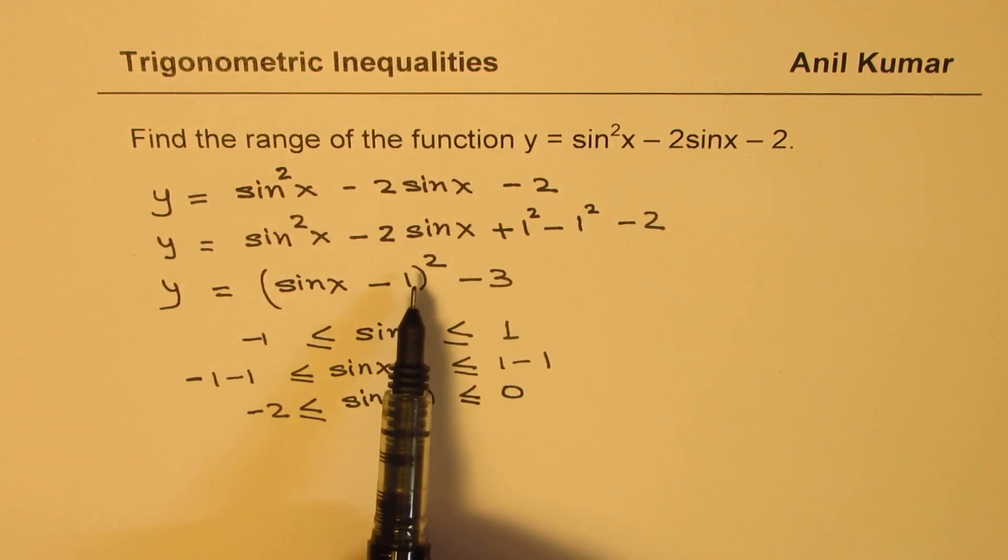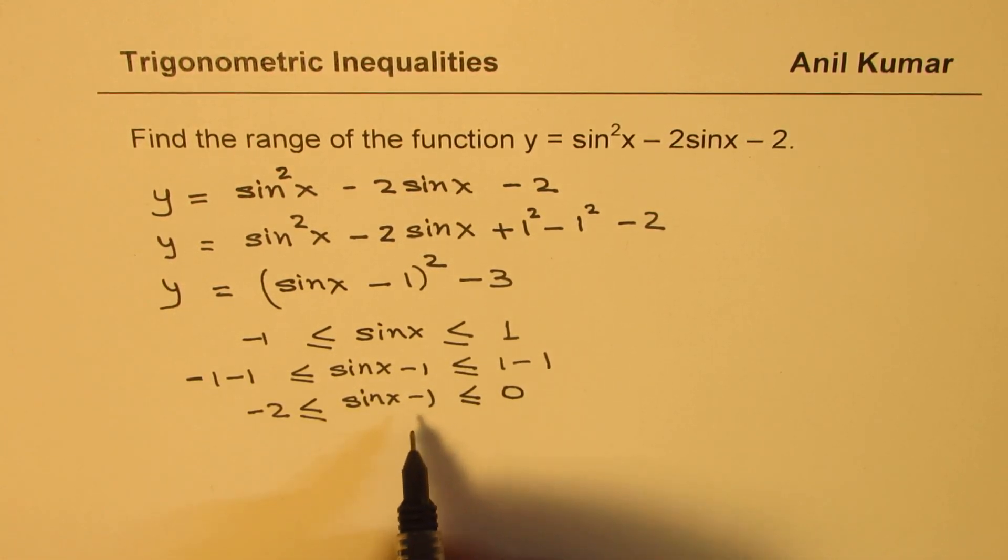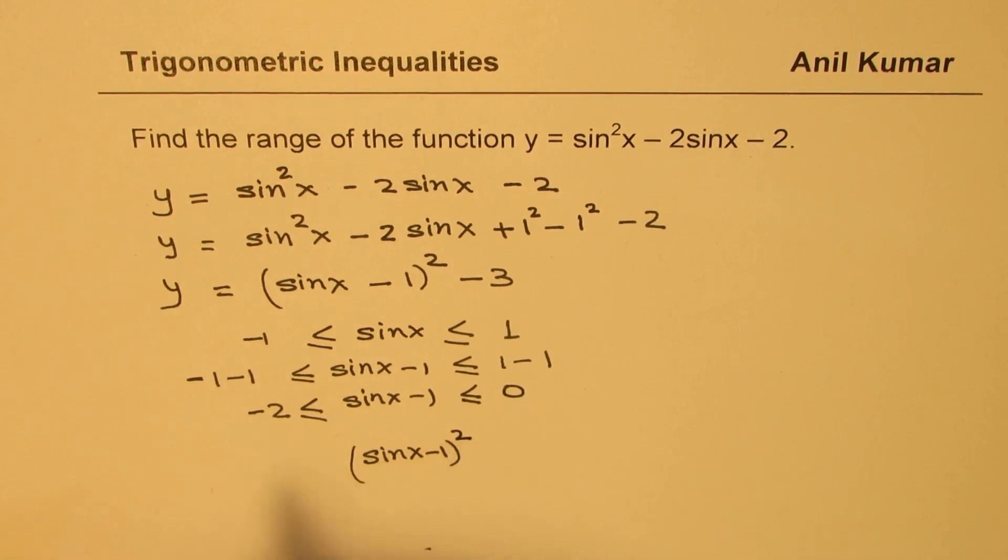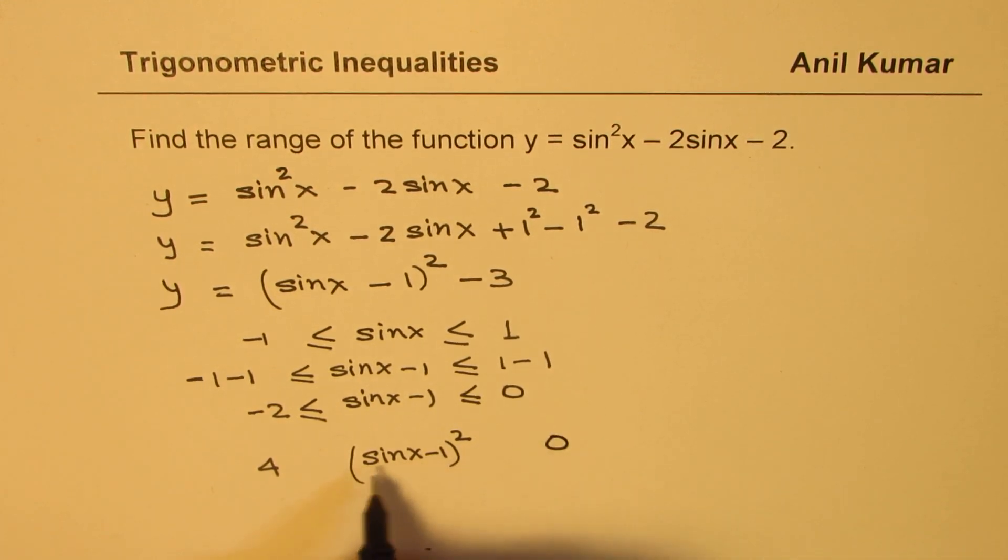So we need to now square. So if I square all these terms they will become positive. So basically when I square I get sine x minus 1 whole square. Now square of minus 2 is positive 4 and square of 0 is 0. So basically this value should be greater than or equal to 0 and less than or equal to 4. Does it make sense?